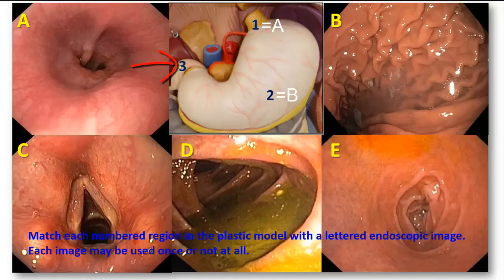3 is located just distal to the pyloric sphincter, so it is in the beginning of the first part of the duodenum. That's to say the region of the duodenal cap, as known to radiologists — the first inch of the first part of the duodenum.